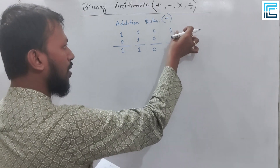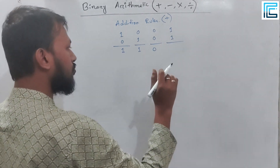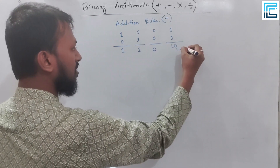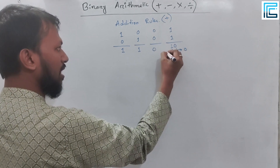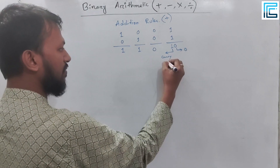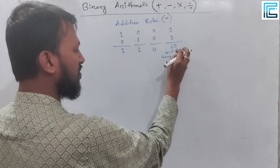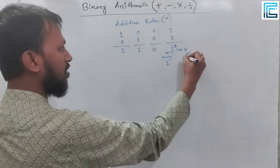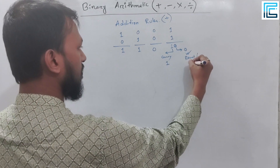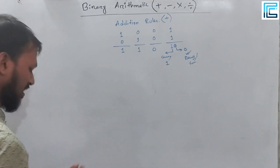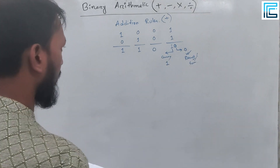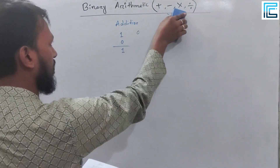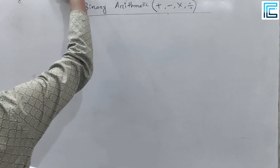The addition rules are: 0 plus 0 gives result 0; 0 plus 1 gives result 1; 1 plus 0 gives result 1; and 1 plus 1 gives result 0 with carry 1. We will now look at an example to apply these rules.